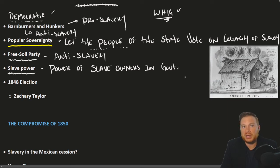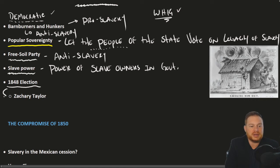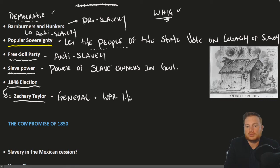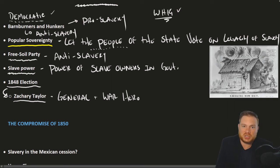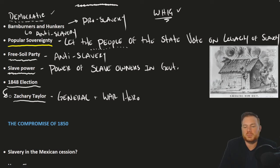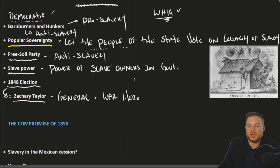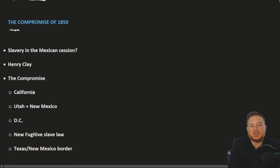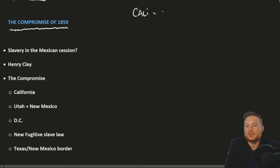Interestingly, for all the debate about slavery in California, the 1848 election really turned out not to have as much to do with it. Americans elected Zachary Taylor, the general and war hero of the Mexican-American War, who didn't really hold a strong position on this particular issue — he pretty much didn't care whether the Western territories went for or against slavery. Nonetheless, this was still a crisis for Congress because California, in the meantime, had drafted a constitution that would admit California as a free state.